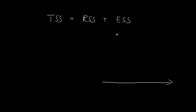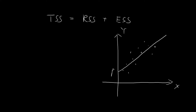So let's say we have our xy-axis and we have all of our data points. Taking all of these data points, we can always develop our regression line with an intercept of β₀-hat and a slope of β₁-hat. In order to determine how well this line fits the data points, we can take a look at the RSS — this term represents the sum of all of these vertical distances squared, the sum of the squared deviations between the data points and the regression line.